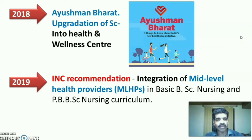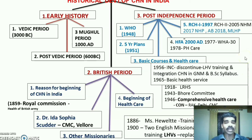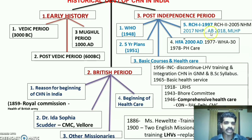In summary, the historical development of community health nursing in India is classified into three broad areas: early history (Vedic, post-Vedic, and Mughal periods), the British period (mid-18th century to 1947), and the post-independence period.